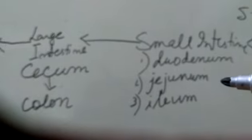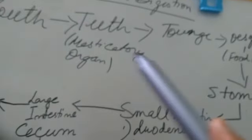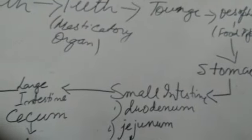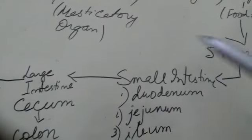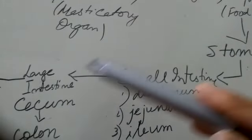To review the stages: the mouth, teeth, tongue, and esophagus are for ingestion. The stomach and small intestine are for assimilation and absorption of food. Finally, the food reaches the large intestine.